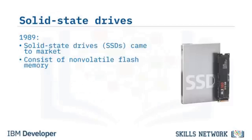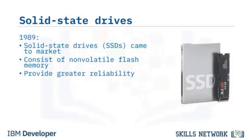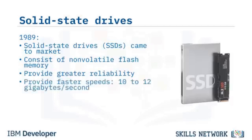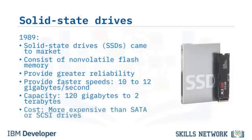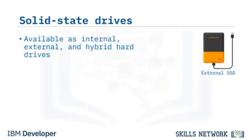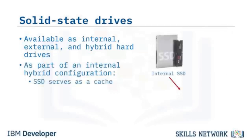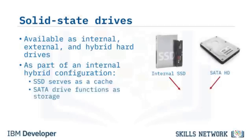SSDs store data on non-volatile flash memory and joined the hard drive market in 1989. SSDs provide significantly more reliability and are faster than traditional drives, operating at speeds of 10 to 12 gigabytes per second. SSD drive capacity ranges from about 120 gigabytes to 2 terabytes. SSDs cost more than equivalent SATA drives but provide significantly more reliability than traditional platter-style hard disk drives. SSDs are also available as external drives and hybrid hard drives. In a hybrid drive configuration, the SSD serves as cache and the SATA drive functions as the storage disk.